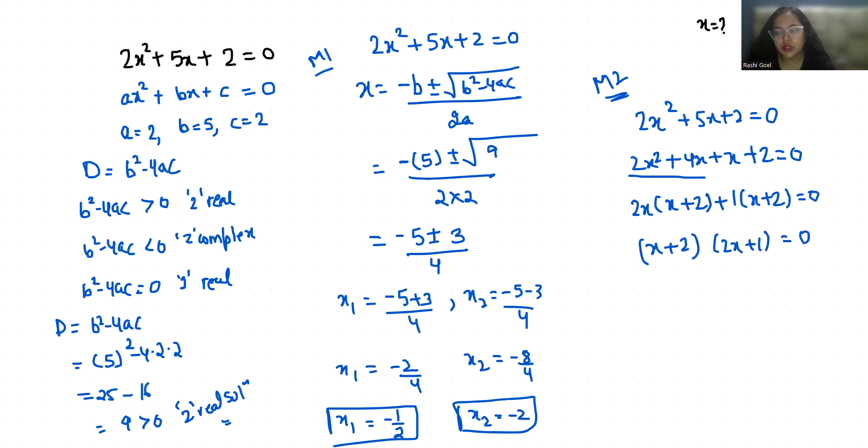So first x + 2 = 0, from here the value of x is -2. And 2x + 1 = 0, so 2x = -1, x = -1/2.